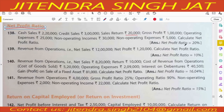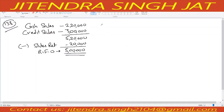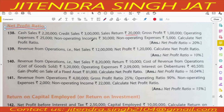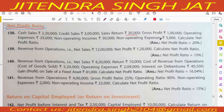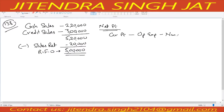We need to calculate net profit. Non-operating incomes are given and non-operating expenses are also given. When gross profit is given, how to calculate net profit? Very simple: gross profit minus operating expenses, minus non-operating expenses, plus non-operating income. In this manner we will calculate net profit.